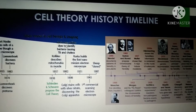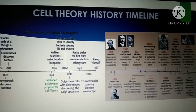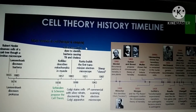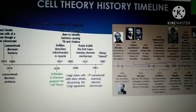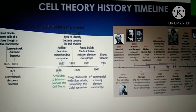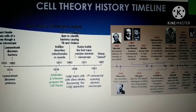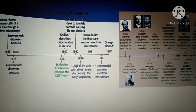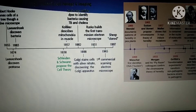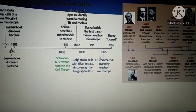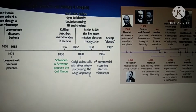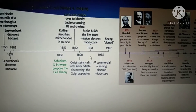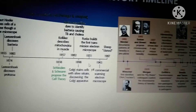In 1882, Koch used a kind of dye to identify bacteria causing tuberculosis and cholera, confirming these pathogens. In 1898, Golgi stained cells with silver nitrate, discovering the Golgi apparatus. As you know, cells are stained so they can be observed under a microscope, because without staining it is not possible to observe them clearly.